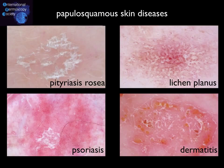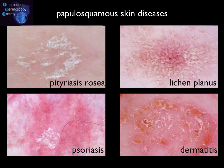Going back to the image we saw before, all four common inflammatory erythematosquamous diseases display dotted vessels. However, only in psoriasis is the arrangement of vessels so homogenous, so symmetric, so regular all over the surface of the lesion — and in this example, this is the most crucial dermoscopic criterion.